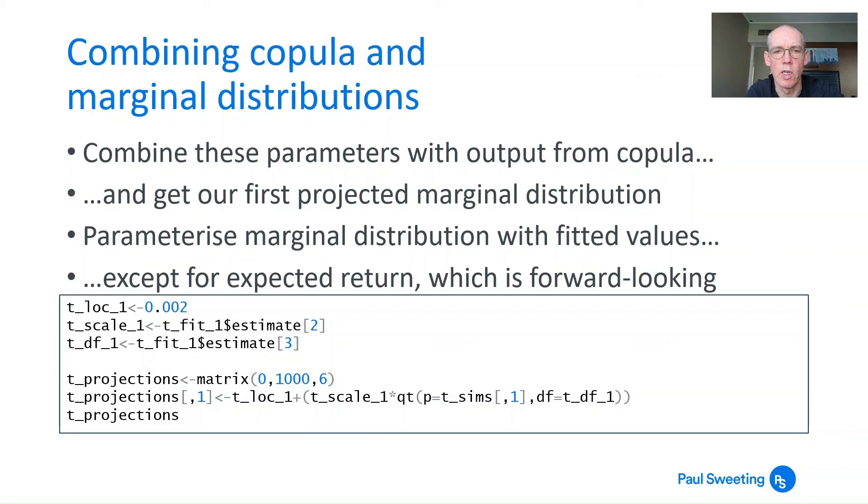How do the results look? Top left is the code in the file, and bottom right shows we've got a matrix that's all zeros apart from that first column we put in. That first column is the t variate we just created. If we do the same for the second, third and fourth, we'd have a range of t distributions. But all that data will be linked by that underlying copula we worked with.